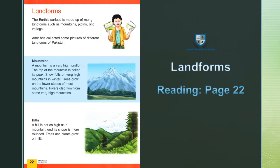Trees grow on the lower slopes of most mountains. Zyada tar darakht pahadon ki dhalwanon par ugte hain. Rivers also flow from some very high mountains. Darya bhi kuch bohut oonchi pahariyon se behte hain.